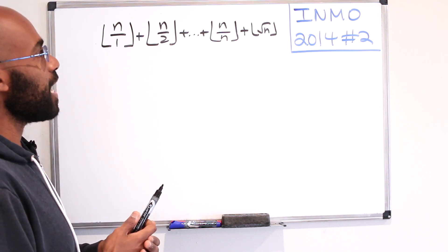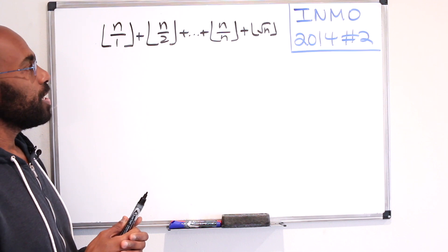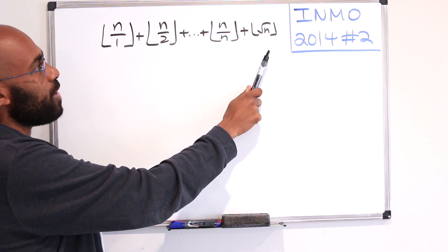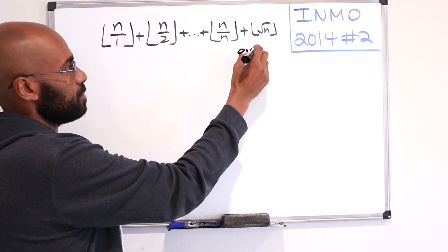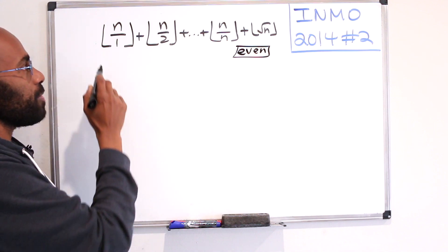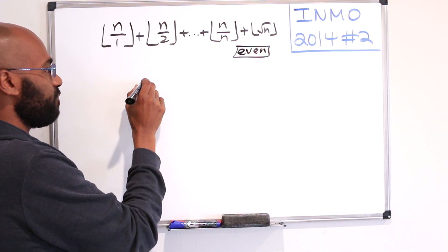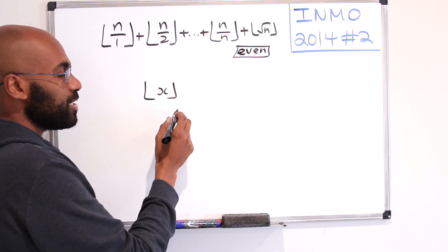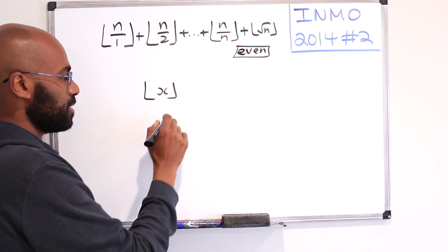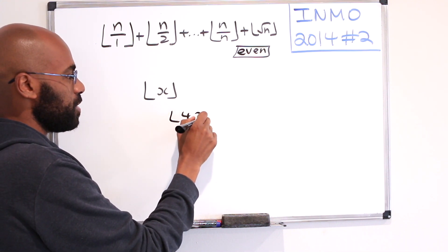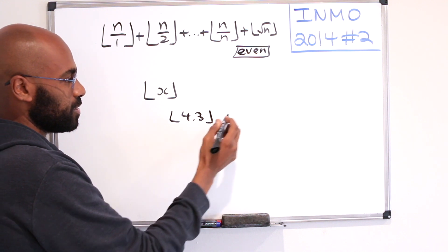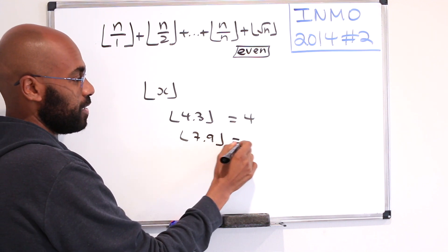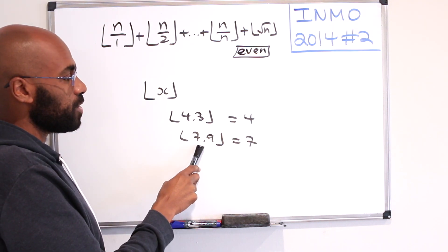Today we're going to discuss INMO 2014 problem 2, and the problem asks to prove that for any positive integer, this quantity right here is always even. So we should talk about what this quantity even is. This function is called the floor function, and it's the greatest integer that's less than or equal to the number x. For example, 4.3, the biggest integer less than this is 4, whereas for 7.9, the greatest integer less than that is 7. So we're taking our real number and rounding it down.